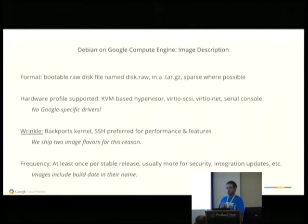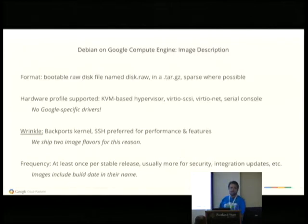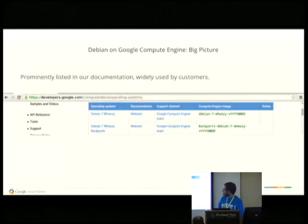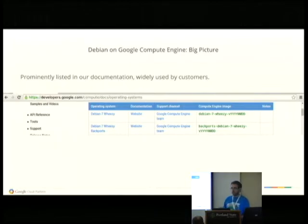Virtio SCSI hasn't been in the kernel for more than a few years, which is new by non-Google standards. For example, multi-queue networking was not supported by Wheezy's copy of Virtio Net, but it is in the Wheezy backports kernel, and there's a major performance boost by using that. There have also been lots of improvements to the SCSI driver. We ship two versions of Debian: one version just uses stuff from stable because it's Debian, and another version includes the kernel and, for performance reasons, SSH from backports. But it's still all from Debian as well.